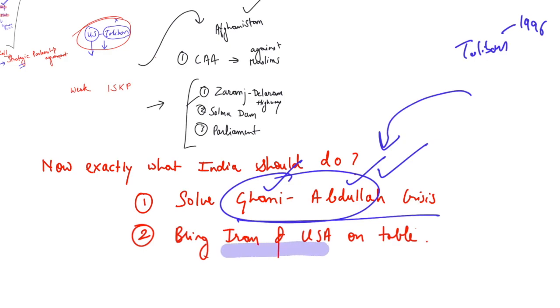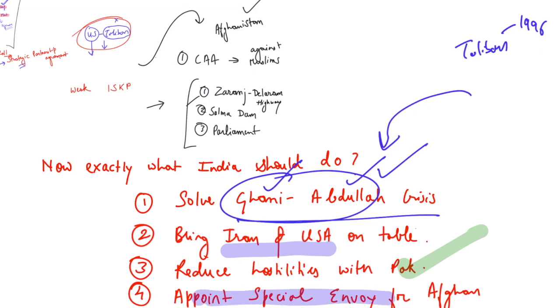After that, India should bring Iran and USA on the same table so that they can deliberate on the peace process for Afghanistan as the Iran and USA's involvement is necessary to bring the long-lasting peace. After that, hostilities with Pakistan are needed to be reduced because Pakistan's support is also very much crucial. And if conflict will continue, then Pakistan and India cannot involve into a constructive dialogue with respect to stability in Afghanistan. And finally, there is a need to appoint a special envoy or representative for Afghanistan who can brief time to time to India as what is the development going on in the Afghanistan. So, this is all the future roadmap for Afghanistan. Please understand this very carefully as it is very important for your GS2 international relations.